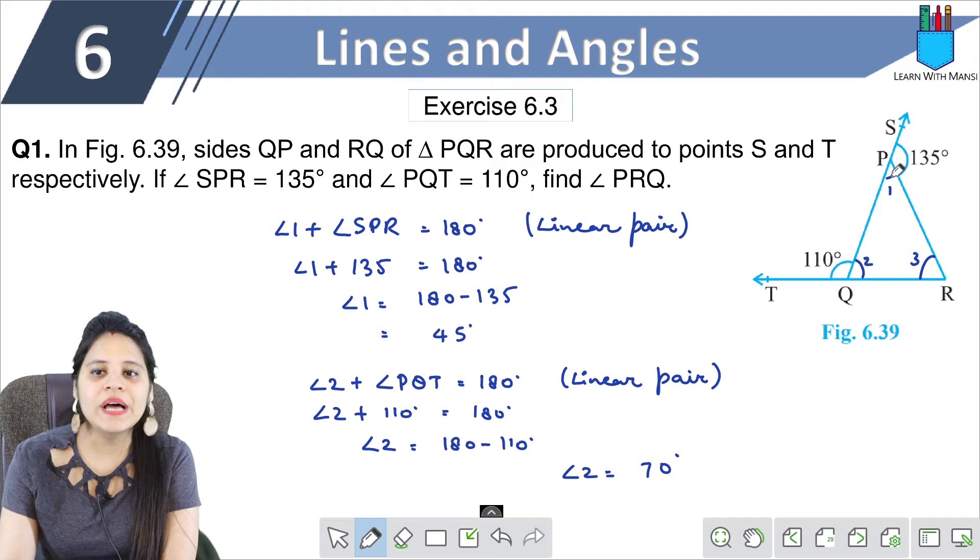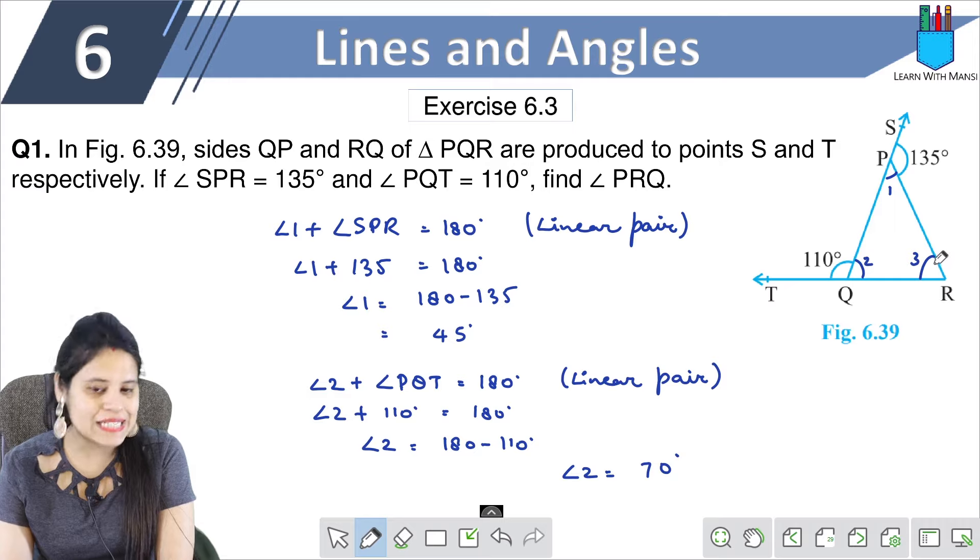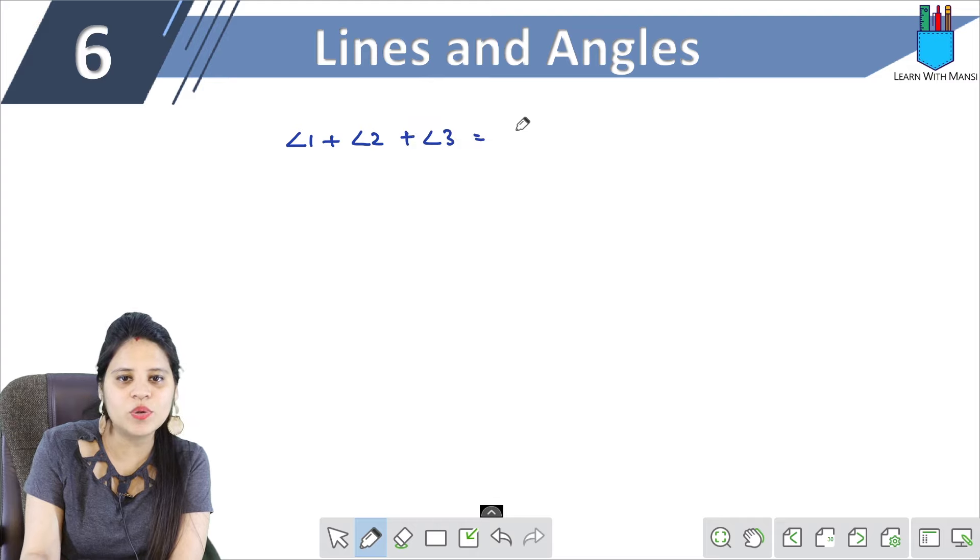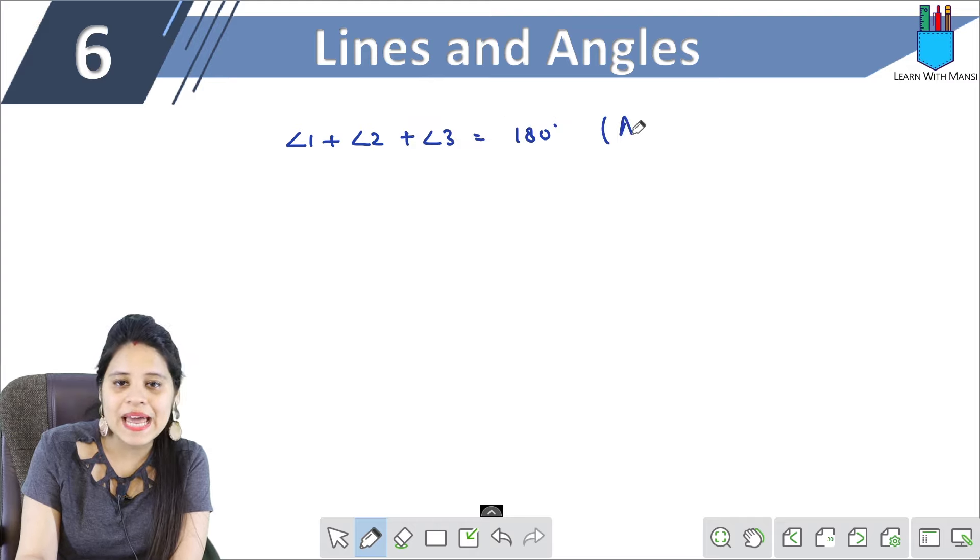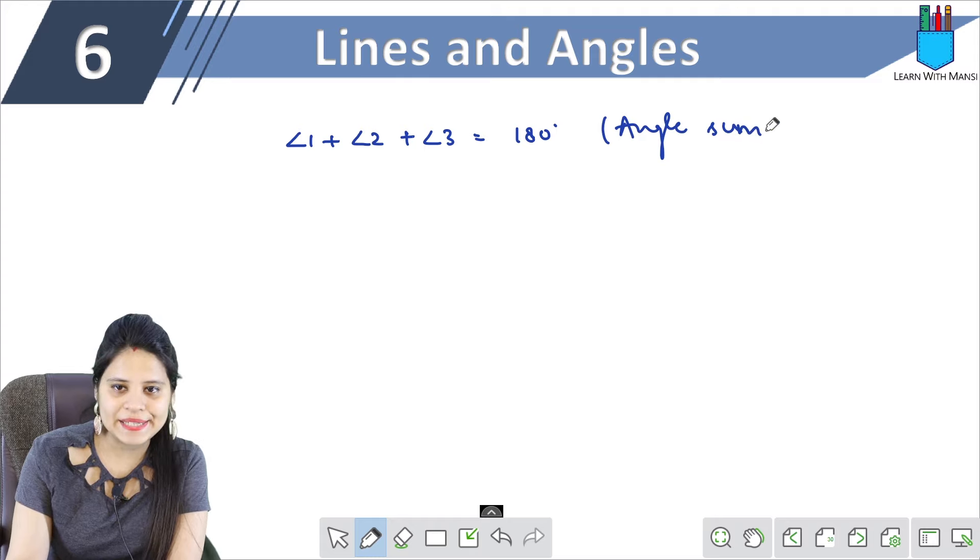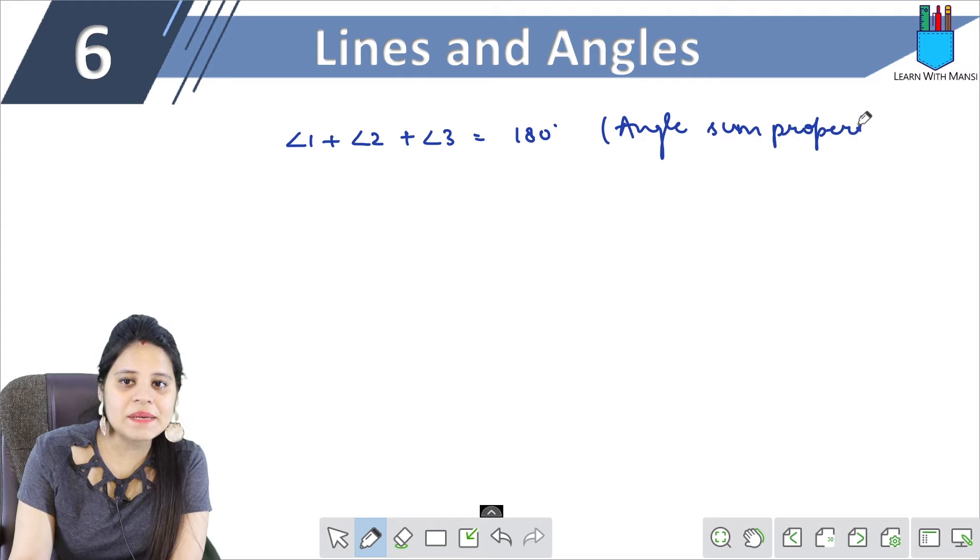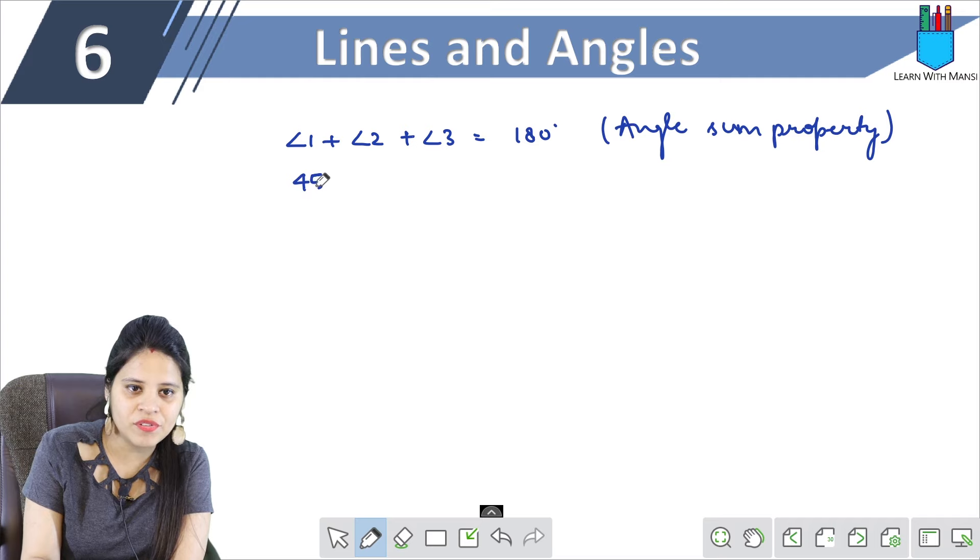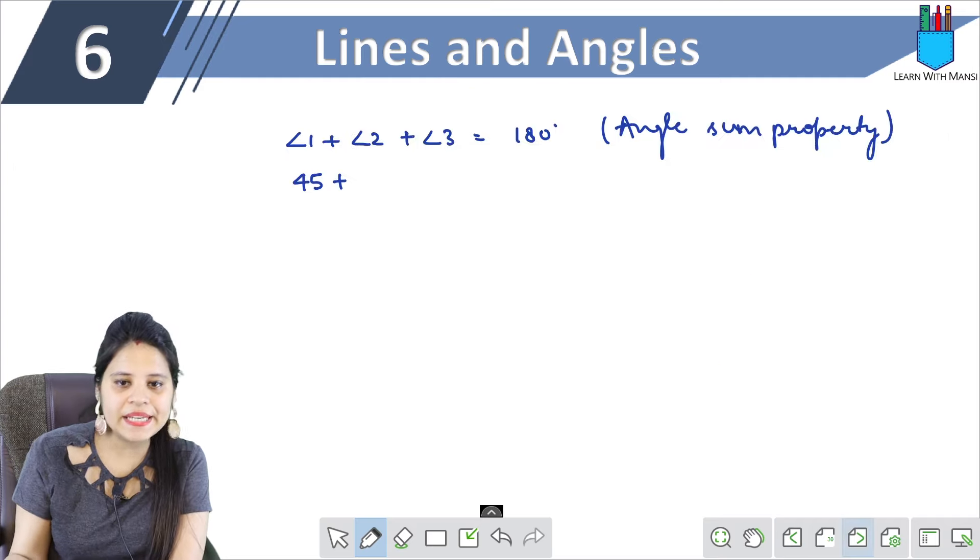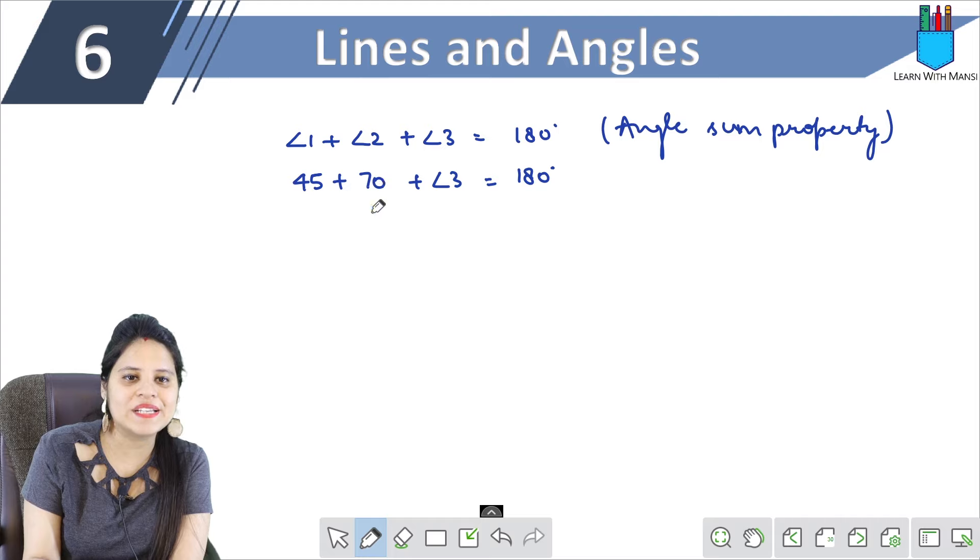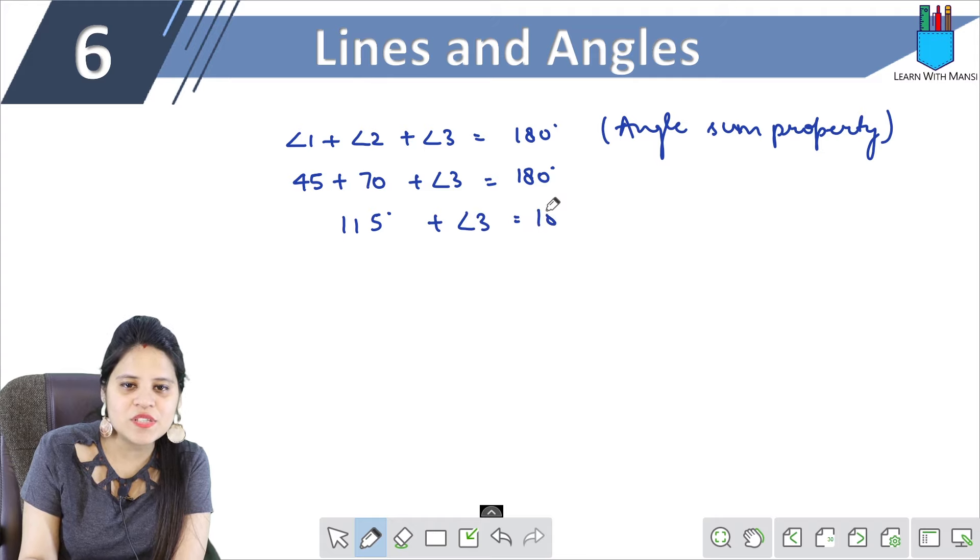Now we have angle 1 and angle 2. Angle 3 needs to be found using angle sum property. So angle 1 plus angle 2 plus angle 3 equals 180 degrees. This is the angle sum property, or sum of all angles of a triangle equals 180 degrees. We will put values here. Angle 1 was 45 degrees plus angle 2 was 70 degrees plus angle 3 equals 180 degrees. So 115 plus angle 3 equals 180 degrees.